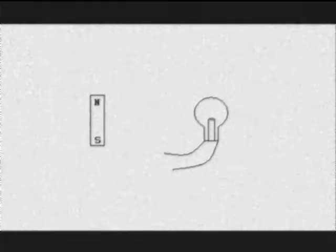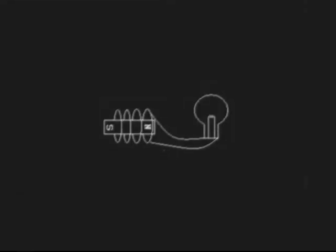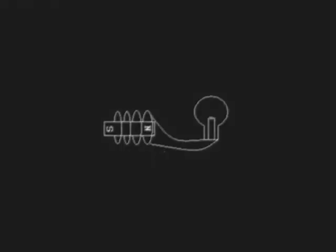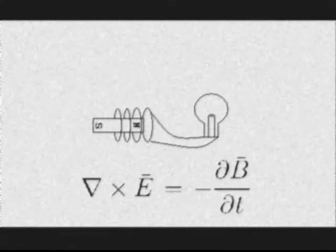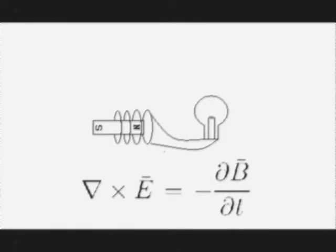And though they both seem different, they are coupled, so the eye can see, partial B, partial T, del cross E.